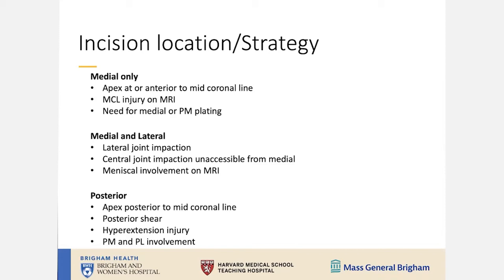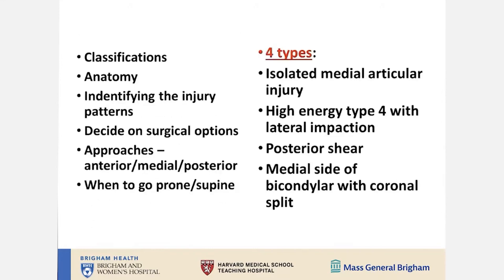When to go posterior: especially with an isolated hyperextension injury to the knee with a posterior shear involving both posterior medial and posterior lateral, it is easier to do this in the prone position. In summary, there are four subtypes of Schatzker 4: the isolated medial, the high-energy type four with lateral impaction, the posterior shear type, and the medial side as part of a bicondylar fracture.